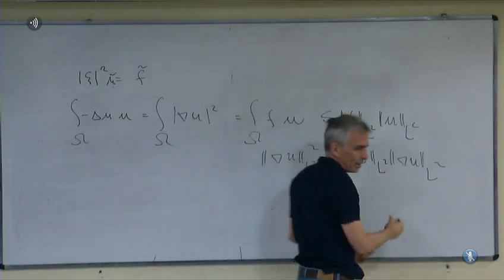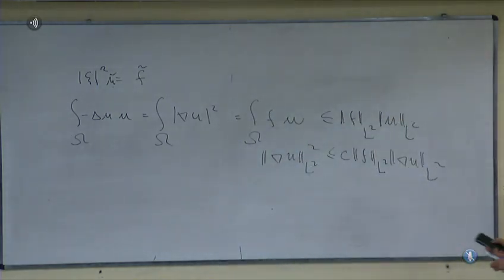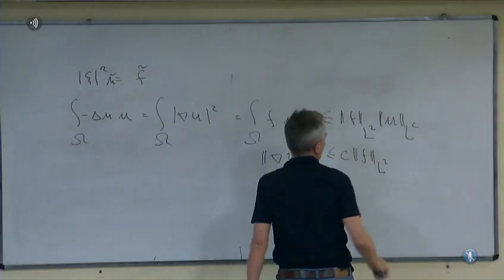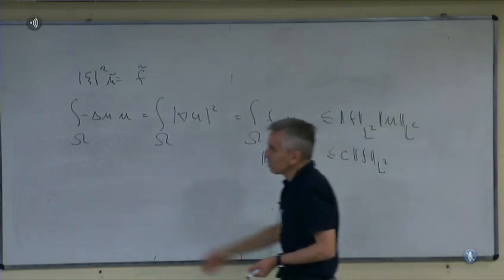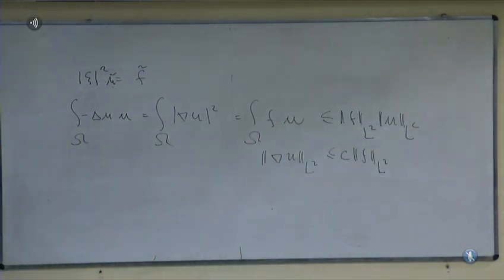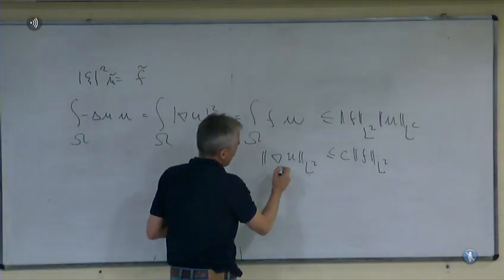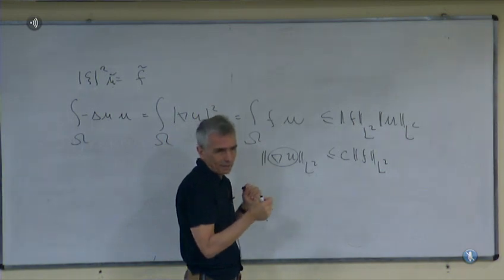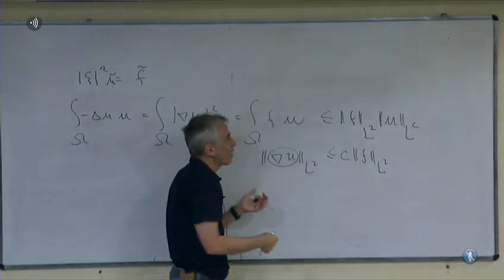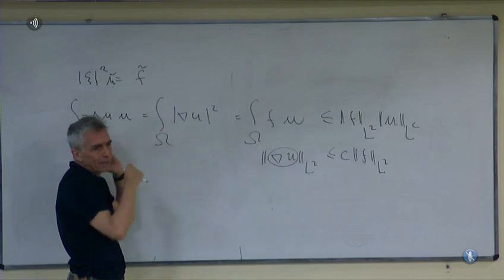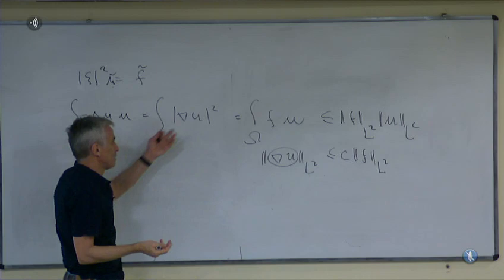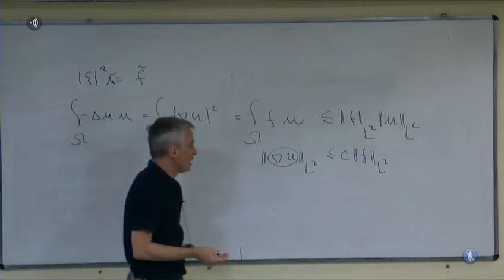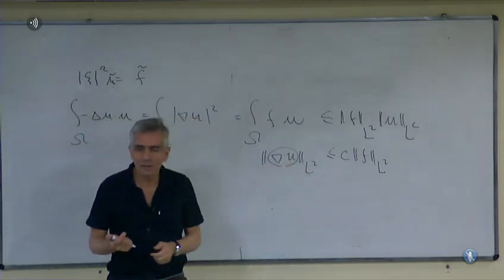From the left-hand side I have the gradient of u in L2 squared, so I can divide by that. This tells me that whenever I have a solution of this problem, its gradient must be bounded in the L2 space. So the solution must satisfy this bound. Assuming everything is smooth, but this can be done in the sense of generalized derivatives as well.